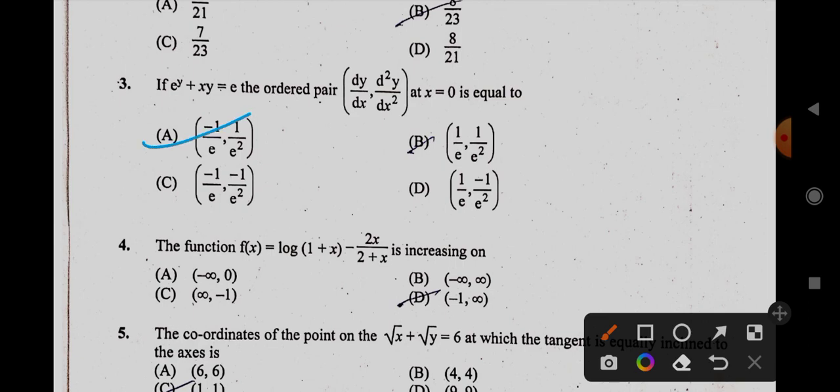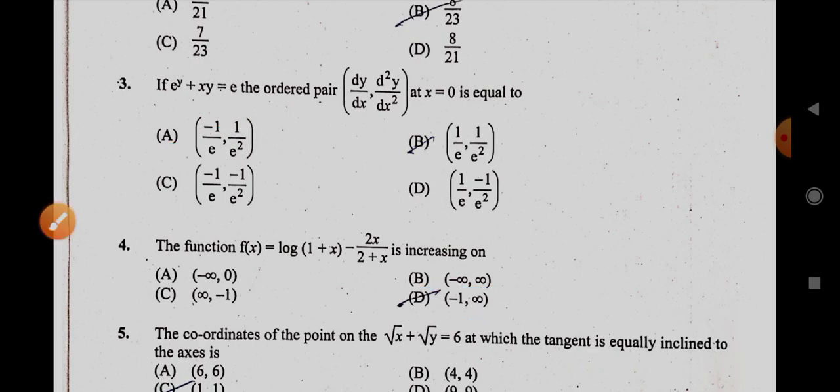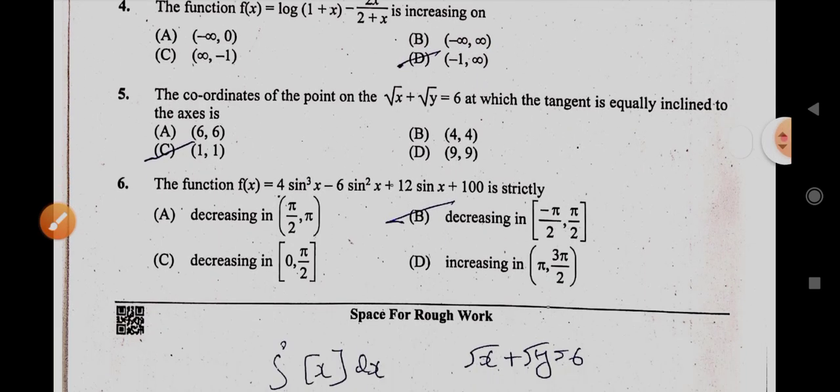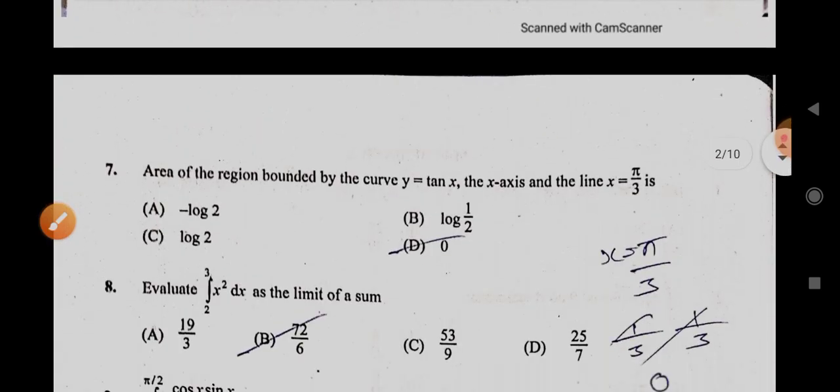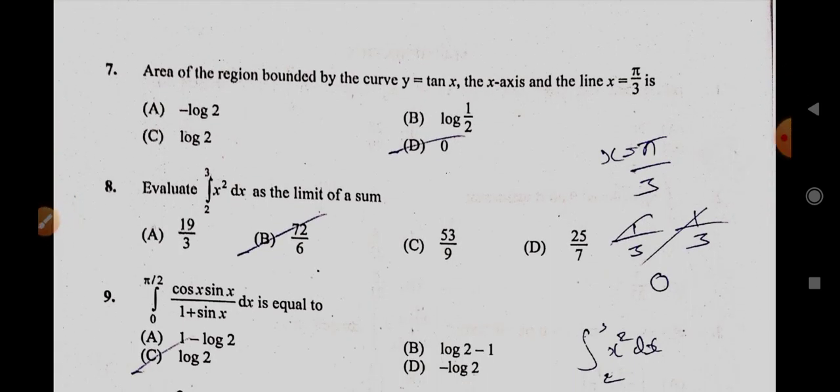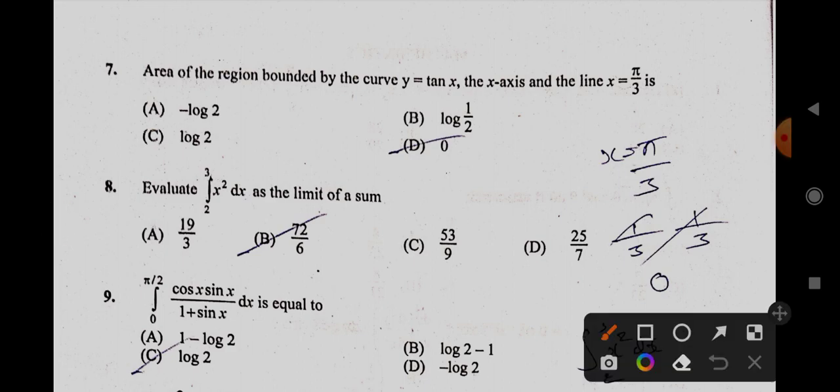And in fourth one, it is minus 1 to infinity, D option. The sixth one is A. And next, seventh one answer is C, log 2. Eighth is A, 19 by 3. And ninth is A, 1 minus log 2.